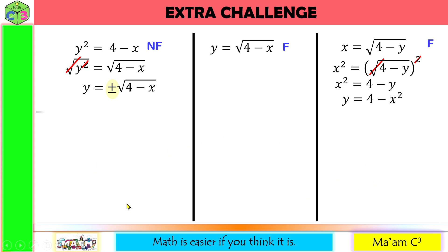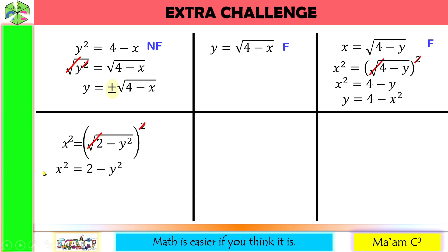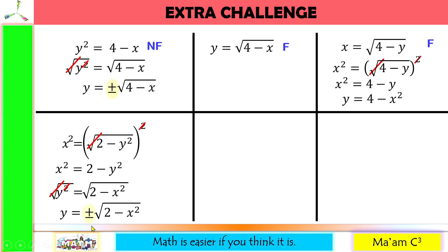Let's have one more. Squaring both sides to solve for y, the radical symbol and exponent cancel out, giving x squared is equal to 2 minus y squared. Isolating y squared gives y squared is equal to 2 minus x squared. Extracting the square roots of both sides, the radical symbol and exponent cancel out, giving two answers — positive and negative. Since y is not unique, therefore this equation is not a function.